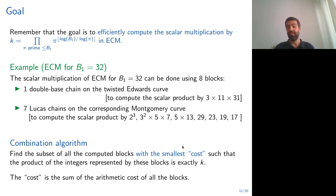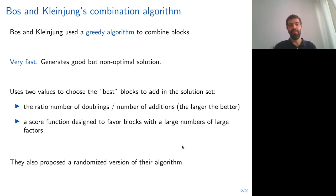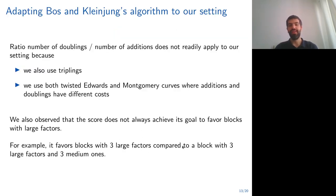By the cost, we mean the sum of the arithmetic costs, which is just counting the number of multiplications and squarings that are needed. In their paper, Bos and Kleinjung proposed a greedy algorithm to combine the blocks. Their algorithm is very fast. It generates good solutions, but not optimal ones. In order to do that, they use two values to choose the best blocks. The first value is the ratio between the number of doublings and the number of additions. The second value is a score function that they designed to favor blocks with a large number of large factors. They also propose a randomized version of their algorithm.